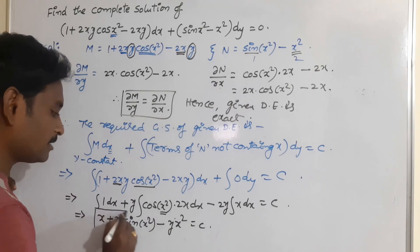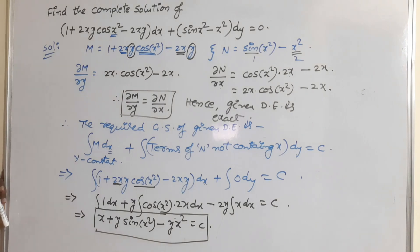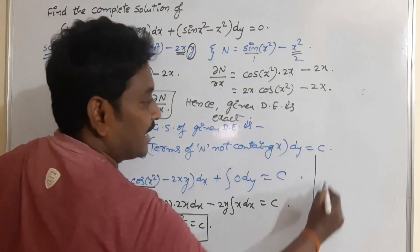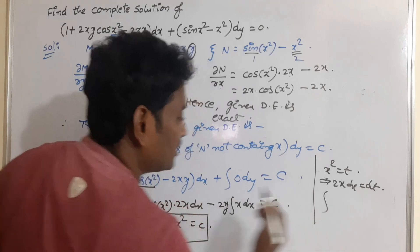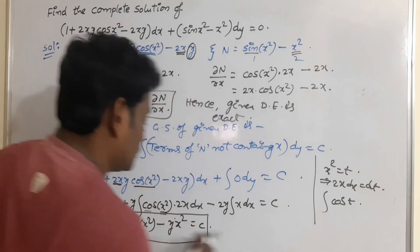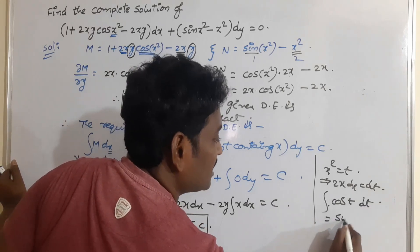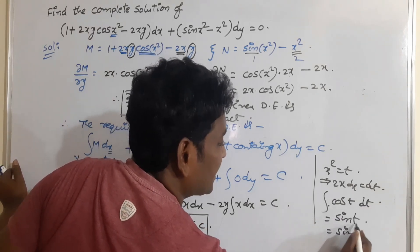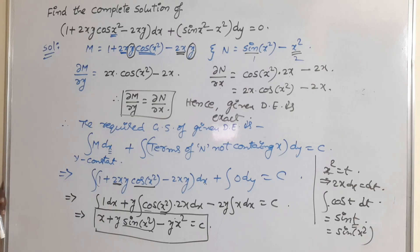So the general solution is x + y·sin(x²) - x²y = c. This is the general solution of the given differential equation. Just to clarify: by replacing x² = t, you get 2x dx = dt, so the entire part becomes ∫cos t dt = sin t, and t is again x². In the next video I will give some more examples on this concept of exact equations. Thank you very much.